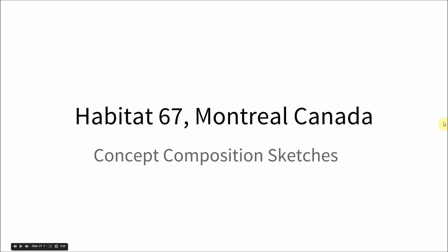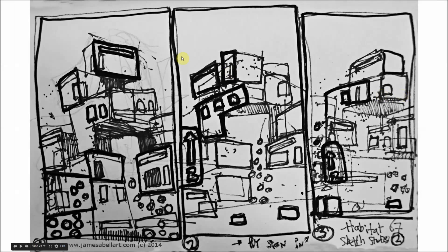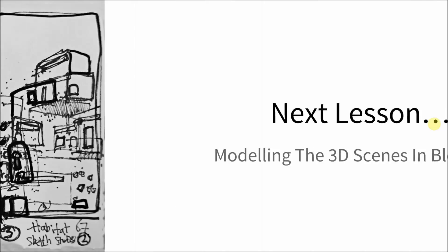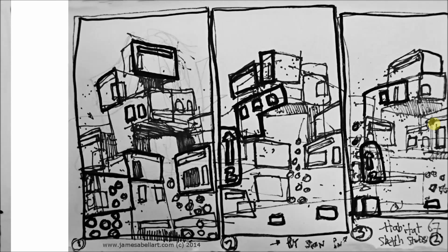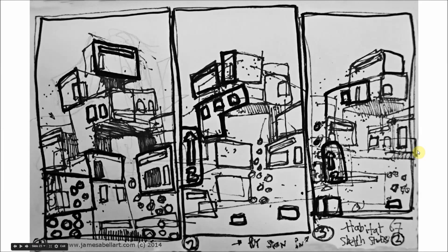Habitat 67 Montreal Canada concept composition sketches: I looked at how the landscape format would look and then decided the portrait format is better. I think you'll agree it gives more of a dynamic stacking effect, whereas the landscape gives more of a 'driving along in a car' effect. You can actually see this building in reality in one of my YouTube videos — if you're subscribed or look in my channel, I've got a drive-past of this building and also the Biosphere.